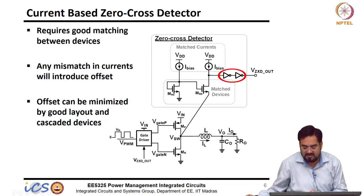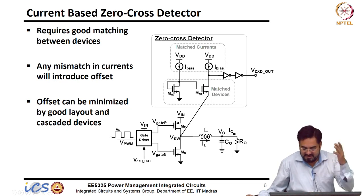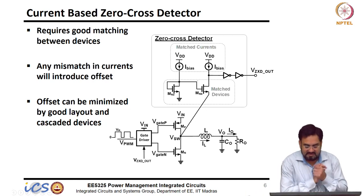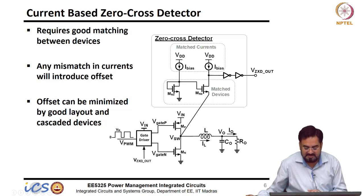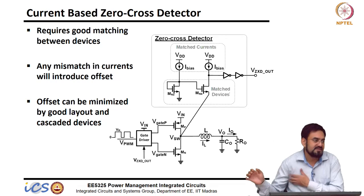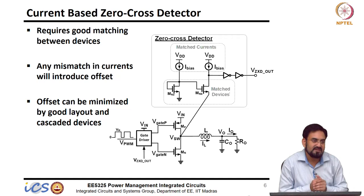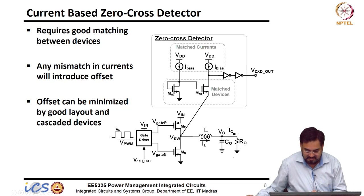These two inverters at the output are used to make it rail-to-rail, because the intermediate node would not be rail-to-rail due to the bias current, and edges may be slower. So they will give you a perfect 0 or 1 level. The problem with this topology is current matching — the bias currents should be matched and the two devices should be matched. Even with a very good layout, a small mismatch near the 0 level may introduce large error. You can minimize the offset with good layout, but there are still chances of mismatch, so we have better techniques and topologies.